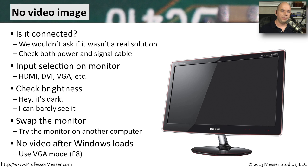If you started your computer, you see your power-on self-test messages go by, you see the Windows splash screen start up, and then everything goes black — but you can still see the computer is working — then the problem may be with the video settings inside of Windows. The catch-22, of course, is that you can't change those configuration settings inside of Windows because you can't see what's on the screen.